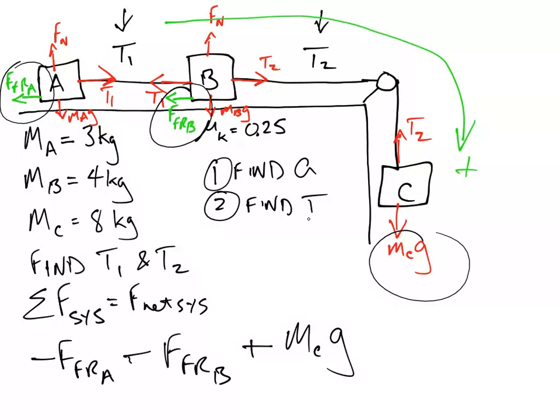So if I show you here, where's my pen? This guy cancels out with this guy. This guy cancels out with this guy. So all the tensions are gone in the system. And of course, these guys are vertical. They don't count. So that's what we're left with.